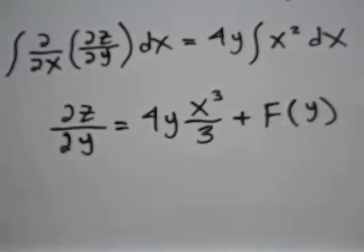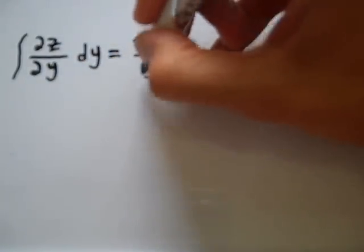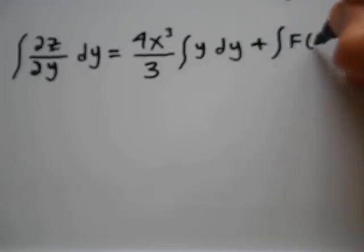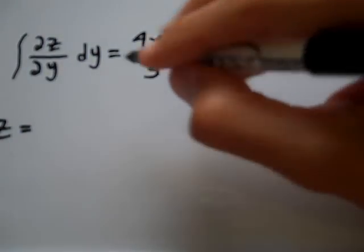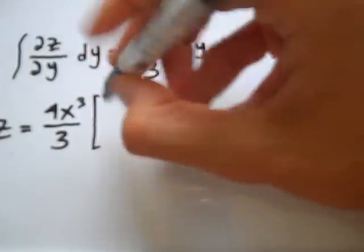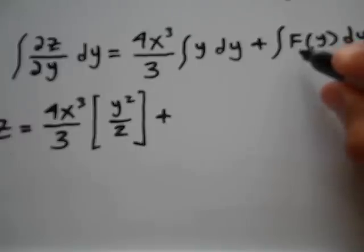Now I'm going to take this equation and integrate with respect to y. I have the integral of the partial derivative of z with respect to y, integrating with respect to y, is equal to 4x cubed over 3 times the integral of y with respect to y, plus the integral of that arbitrary function f(y). When I integrate, on the left-hand side I'm left with z, and on the right-hand side I have 4x cubed divided by 3, and integrating y with respect to y gives y squared divided by 2, plus the integral of the arbitrary function f(y).